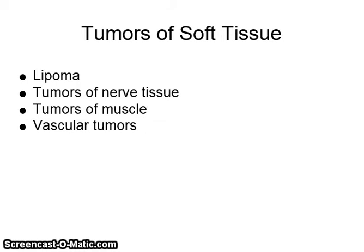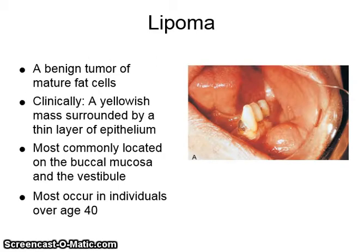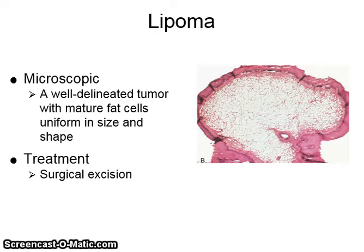Tumors of soft tissue include lipoma, tumors of nerve tissue, tumors of muscle, and vascular tumors. Lipoma is a benign tumor of mature fat cells. Clinically, it is a yellowish mass surrounded by a thin layer of epithelium, most commonly located on the buccal mucosa of the vestibule. It mostly occurs in individuals over the age of 40. Microscopically, a well-delineated tumor with mature fat cells uniform in size and shape is seen. It is treated with surgical excision.